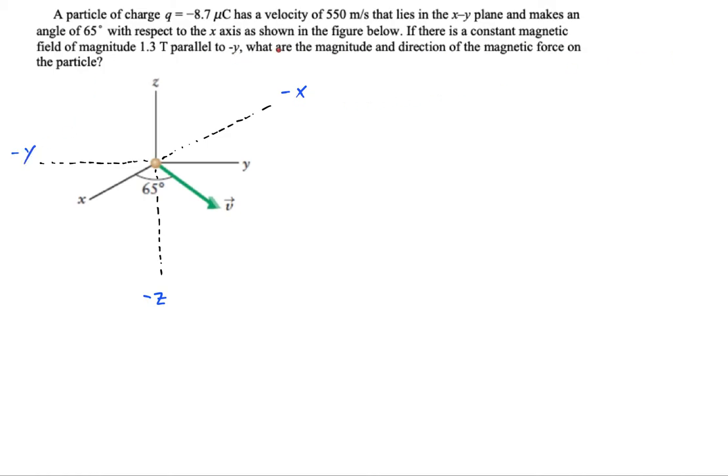Now they're going to say that there's a constant magnetic field parallel to negative y, so they're talking about a field which points this direction. It's just going to be like a uniform field throughout the whole thing, but I'm just going to draw one vector.